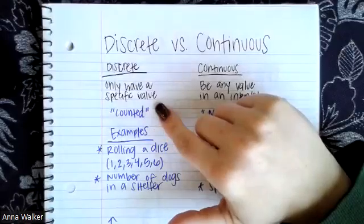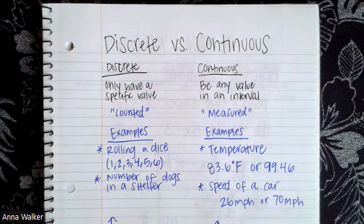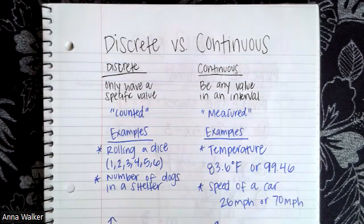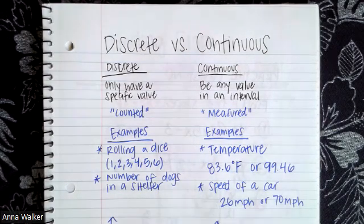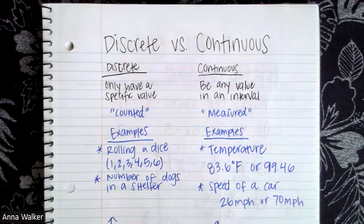Discrete data is data that has a specific value — it's data that can be counted. So for example, if we roll a dice, we can get the numbers one, two, three, four, five, or six. We can't get anything in between those numbers. So if I was to roll a dice 10 times and record those values, it's either going to be a one, two, three, four, five, or six every single time.